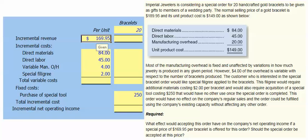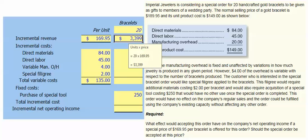Our incremental revenue per bracelet is $169.95 and our variable cost per bracelet totals $135. The question is whether that contribution margin per unit is enough to cover the cost of our special tool. Let's calculate our incremental revenues in total: $169.95 per bracelet times 20 bracelets will generate $3,399 in revenue.